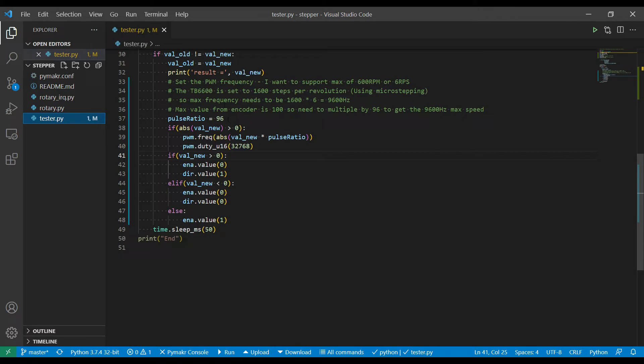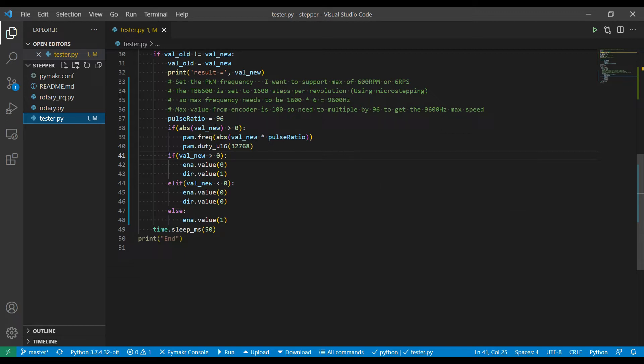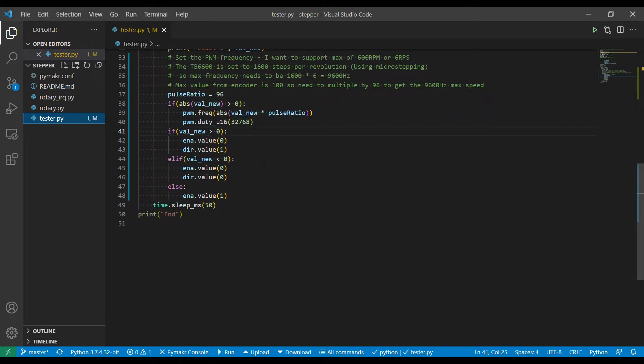I'm going to do some division here to get the pulse ratio to get the motor turning at a known speed based on the number of steps that I've set the stepper motor controller to. And then there's just some conditions here to check if the value is greater than zero, then it's going to work out the new and set the new pulse width modulation frequency based on our ratio and what the value is, again setting the duty cycle to 50%.